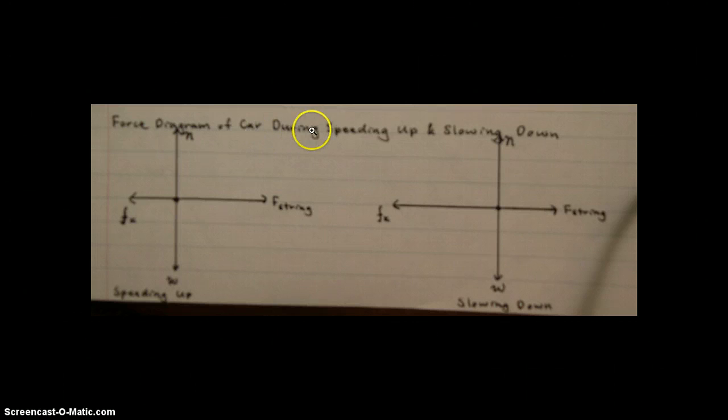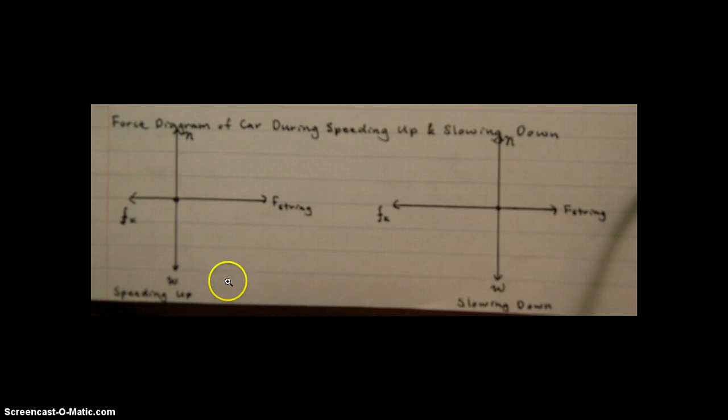Force diagram of the car during when it is both speeding up and slowing down. So first we will look at the car when it is speeding up. Since the car traveled on a relatively level ground, we will assume that normal force and weight cancel each other out, or are equal. And since the car is speeding up, the force of the string pulling the car is greater than the friction of the wheels that is acting on the car.